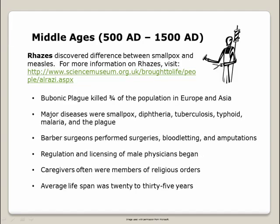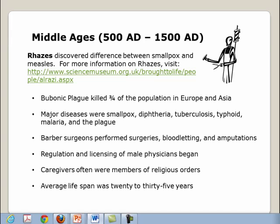Middle Ages, 500 A.D. to 1500 A.D. It was during this time that an Islamic scholar known as Rhazes discovered the difference between smallpox and measles. The bubonic plague killed three-fourths of the population in Europe and Asia. The major diseases were smallpox, diphtheria, tuberculosis, typhoid, malaria, and the plague. There were barber-surgeons who performed surgeries, bloodletting, and amputations. This is when the regulation and licensing of male physicians began. Most caregivers were members of religious orders. The average lifespan was between 20 and 35 years.